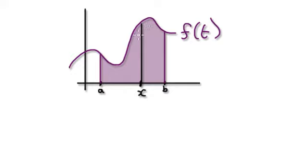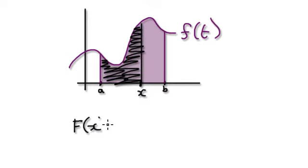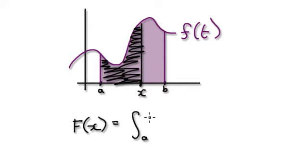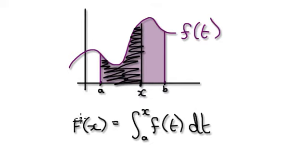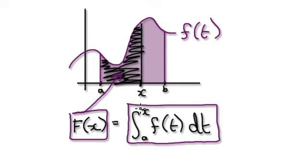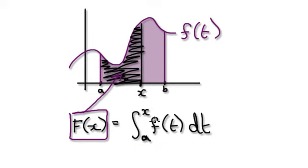With FTC2, we are really concerned about the area in here. Let's call this area capital F of x. Capital F of x represents that area, which is really the integral from a to x of f of t dt. So we are using this to represent the area here, and this area is given by the integral from a to x.